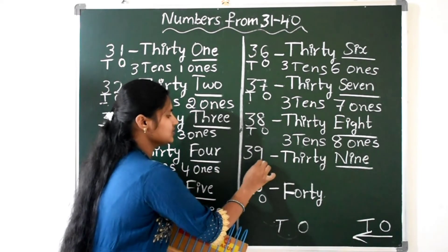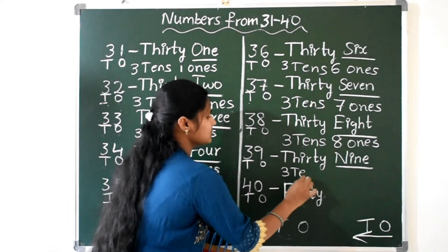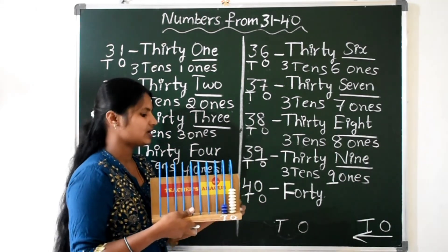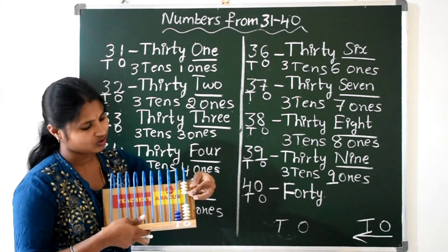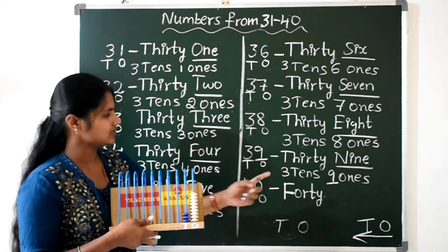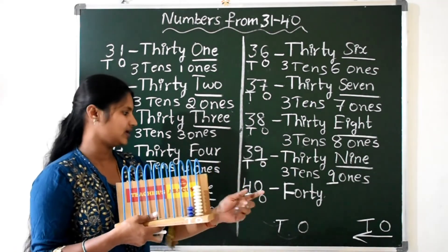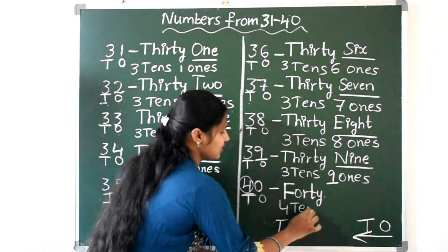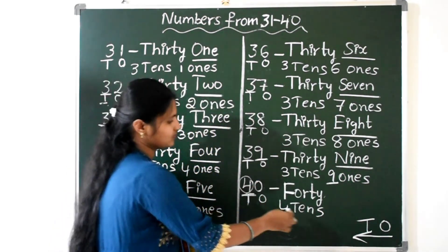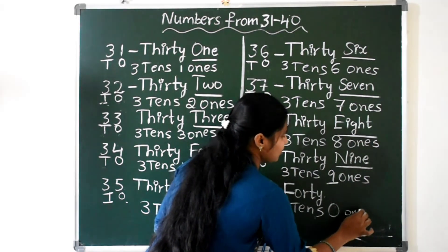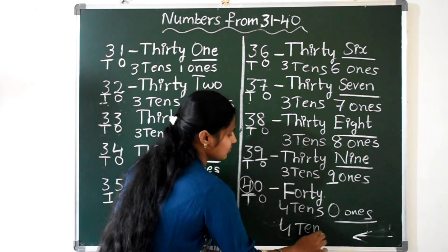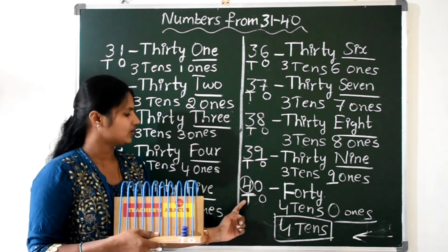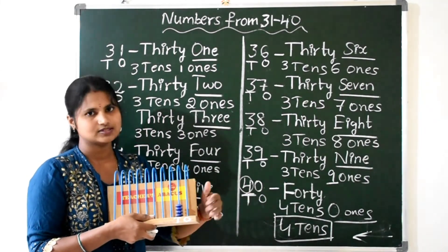Next, 39. Ones place and tens place. 3 tens and 9 ones — count: 1, 2, 3, 4, 5, 6, 7, 8, 9 in ones place. So 3 and 9 makes 39. Next, 40. How many tens? 4 tens. And 0 ones. So no need to write ones. We can write directly 4 tens only. 4 tens makes 40. In tens place we place 4 beads, ones place 0. So 4 and 0 makes 40.